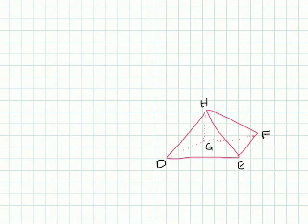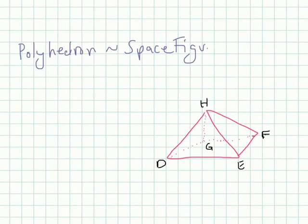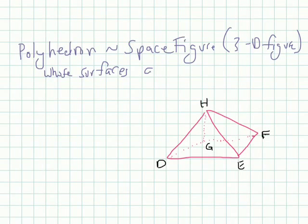The very first one I want to establish is what is a polyhedron? A polyhedron is basically a space figure. Most people might be used to calling this a three-dimensional figure. So space figure and three-dimensional figure, the same thing, whose surfaces are polygons.